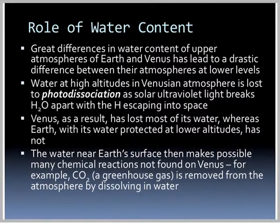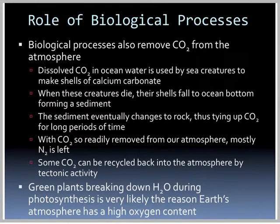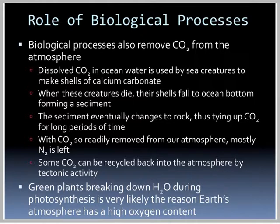Water near Earth's surface makes possible many chemical reactions not found on Venus. CO2 is removed from the atmosphere because it dissolves in liquid water, and biological processes also remove CO2. Dissolved CO2 in ocean water is used by sea creatures to make shells of calcium carbonate; when they die, shells fall to the ocean floor forming sediment that eventually becomes rock, tying up large amounts of CO2 for very long periods. Some CO2 is recycled back as subduction takes ocean floor material down, melts it, and CO2 becomes gas again during volcanic eruptions. Green plants breaking down H₂O during photosynthesis is very likely why Earth's atmosphere has a high oxygen content.